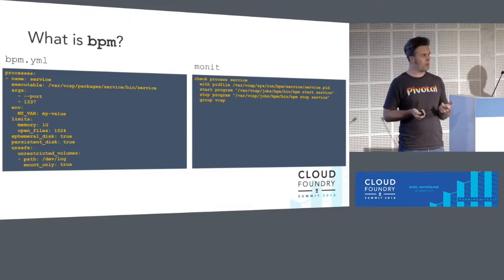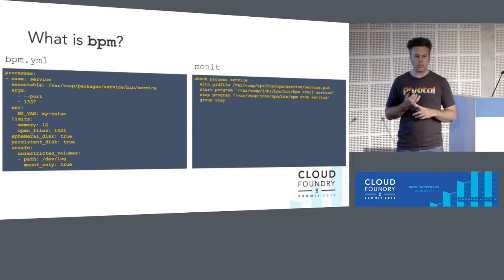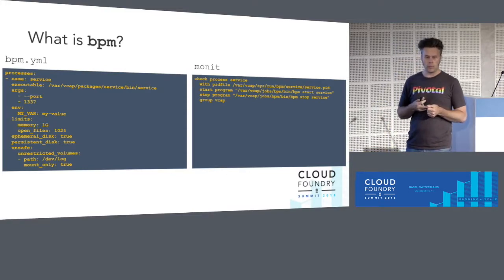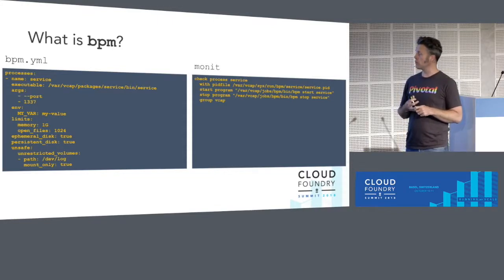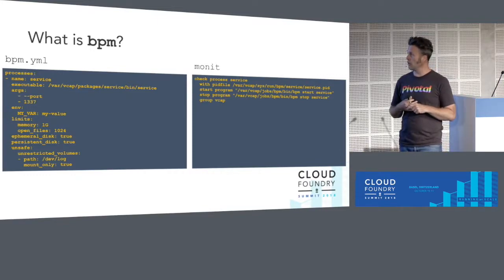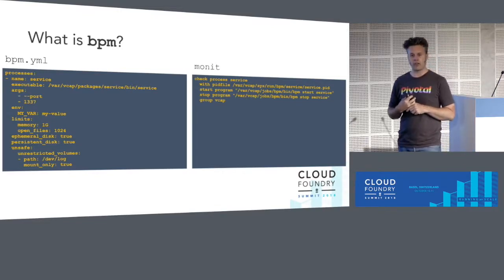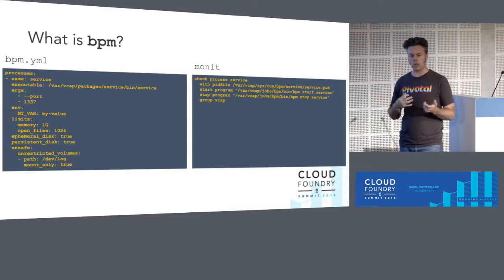This is what using BPM looks like in your Bosch release. The BPM YAML contains one or more named processes, a path to an executable — could be a script or a binary — any arguments you want to pass, environmental variables you want to set, some limits you can set for memory and open files. You let the system know whether you want to write to an ephemeral disk or a persistent disk location. And there's an unsafe section — an escape valve for releases that don't conform to normal Bosch conventions. We involve Monit only as a way to invoke BPM using start-stop conventions and a well-known PID file location.